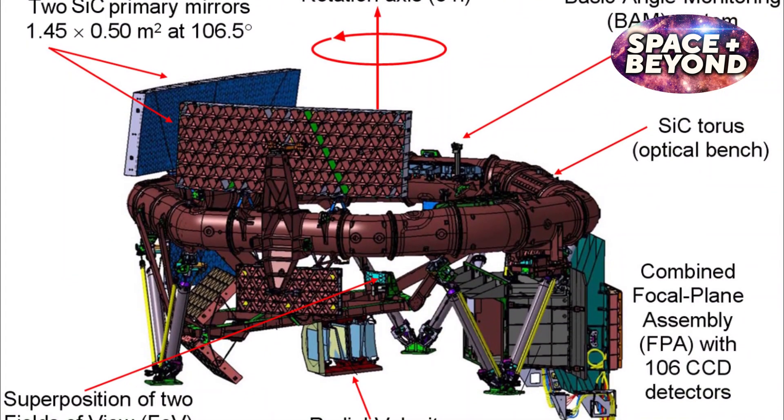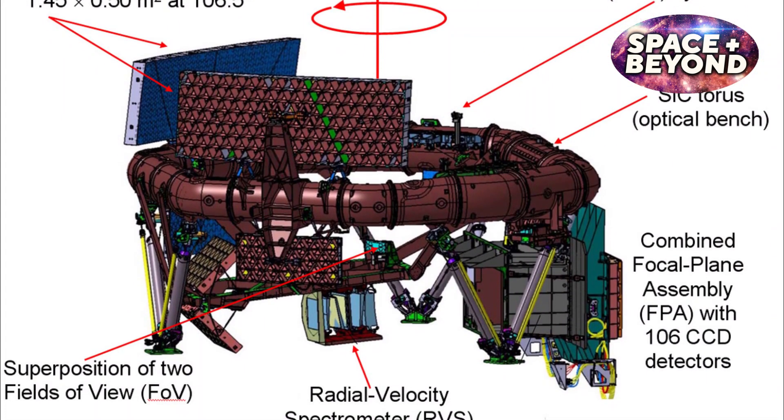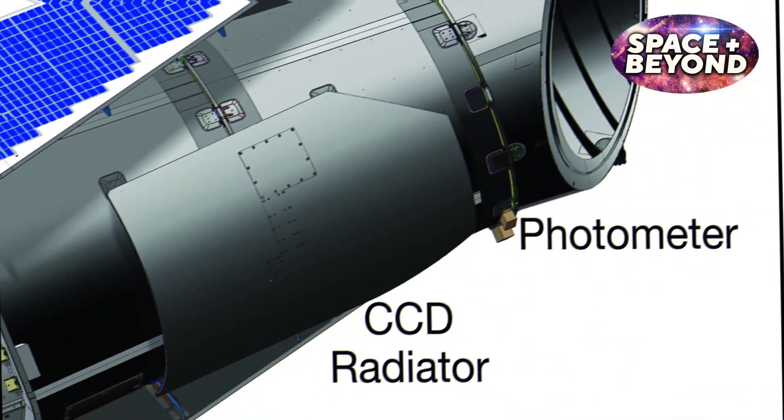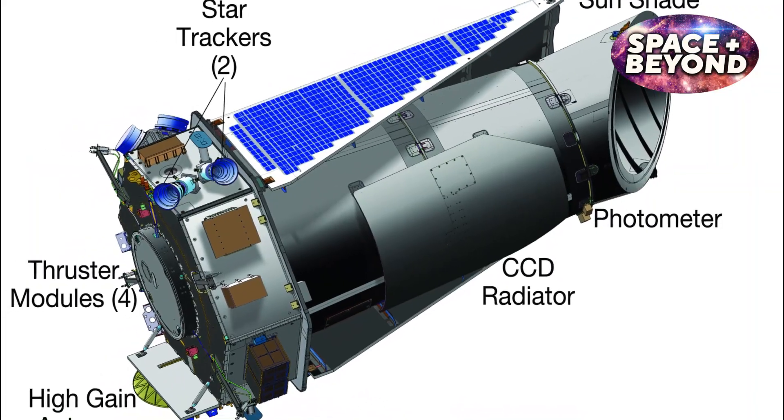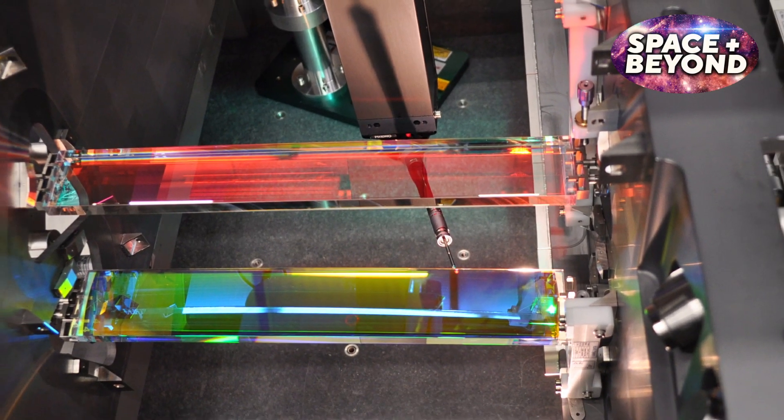The astrometric instrument is made up of two telescopes sharing a common focal plane. The photometric instrument consists of an array of 10 CCDs that measure broadband magnitudes in three different colors